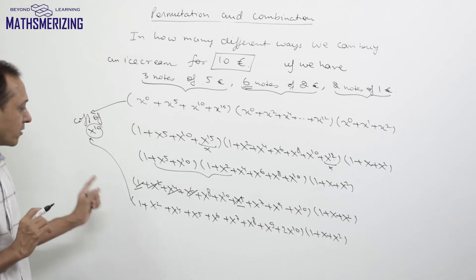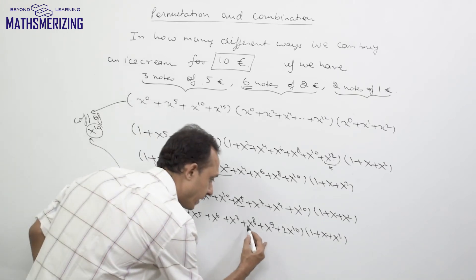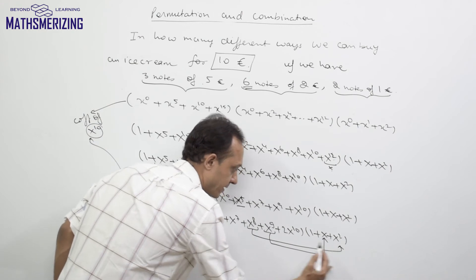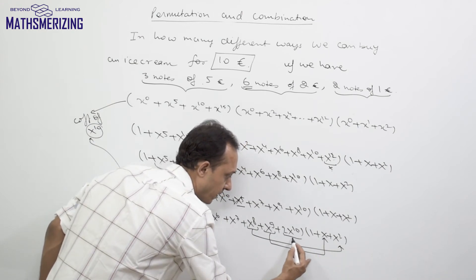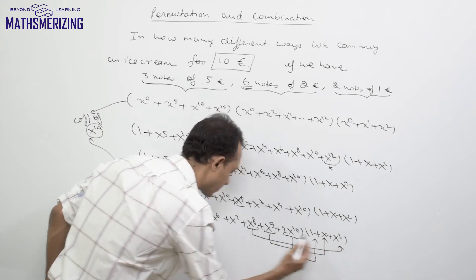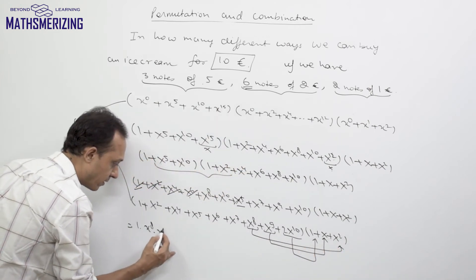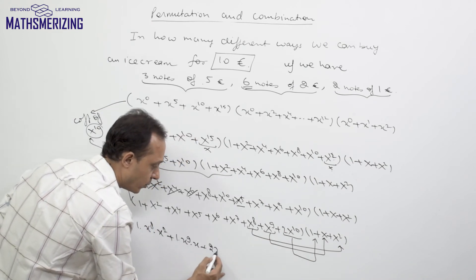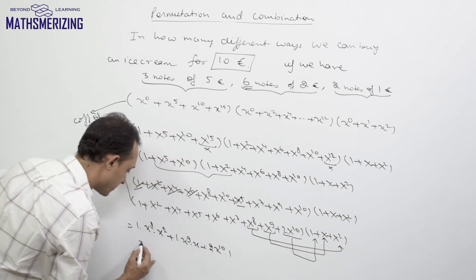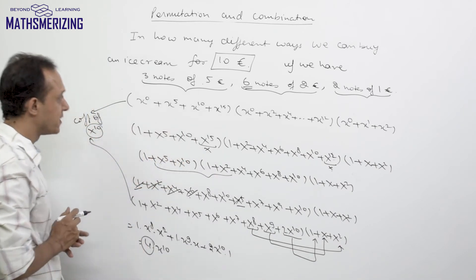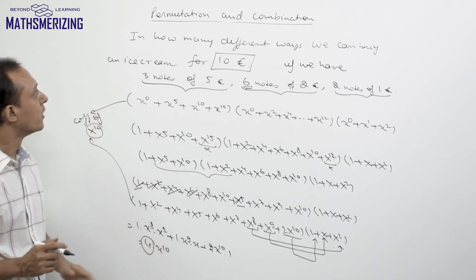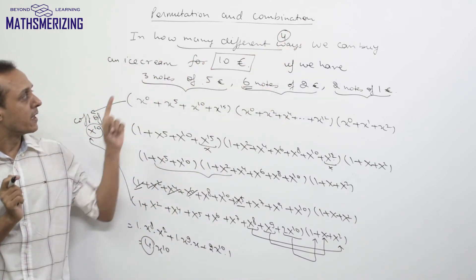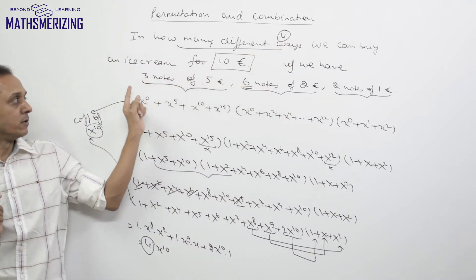To get x^10 from the product with (1 + x + x^2): x^8 multiplied by x^2 gives 1·x^10; x^9 multiplied by x gives 1·x^10; and 2x^10 multiplied by 1 gives 2·x^10. Adding these contributions: 1 + 1 + 2 = 4. So the coefficient of x^10 is 4, meaning there are exactly 4 different ways to buy the ice cream for 10 euros.